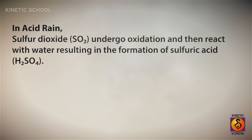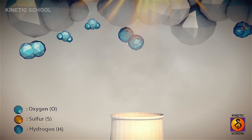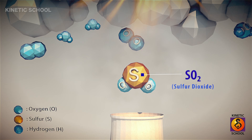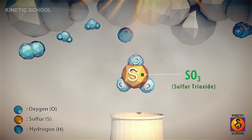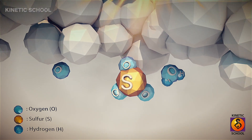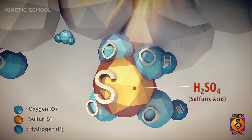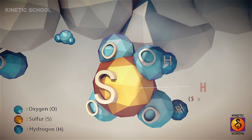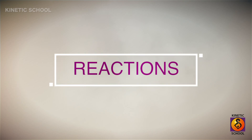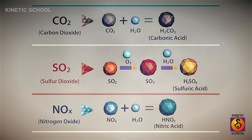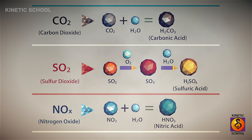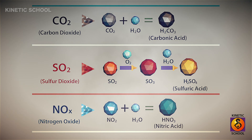In acid rain, sulfur dioxide undergoes oxidation and then reacts with water, resulting in the formation of sulfuric acid. Chemical reactions: carbon dioxide reacts with water to form carbonic acid. Sulfur dioxide gradually oxidizes to form sulfur trioxide, and sulfur trioxide reacts with water to form sulfuric acid. Nitrogen dioxide reacts with water to form nitric acid.